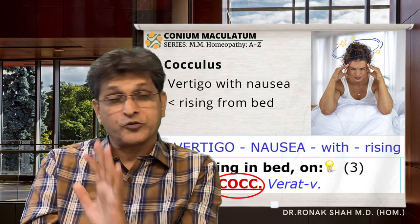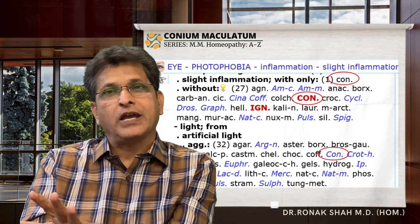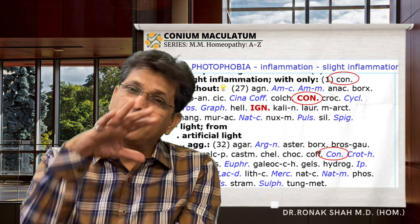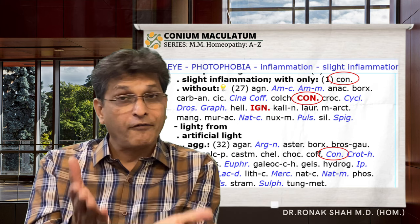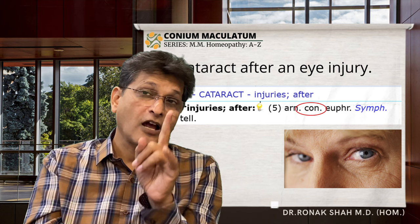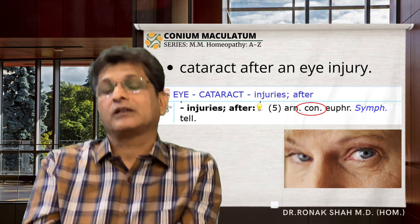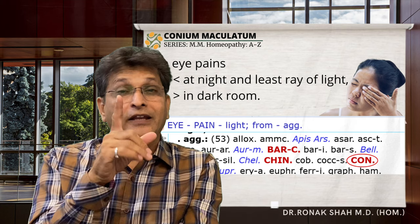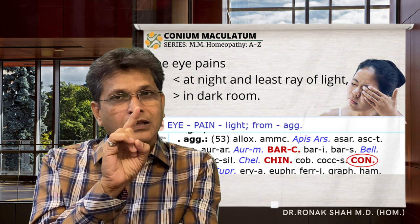Another very characteristic feature of Conium is photophobia with excessive lacrimation, without inflammation, or from the slightest abrasion or ulceration of the eye. The patient remains in artificial light with great discomfort. We have a rubric for that. Cataract after eye injury is another indication. The eyes pain severely at night and are terribly aggravated by the least ray of light, so the patient lives in a dark room — hence the rubric 'pain — light — aggravation' covers Conium.